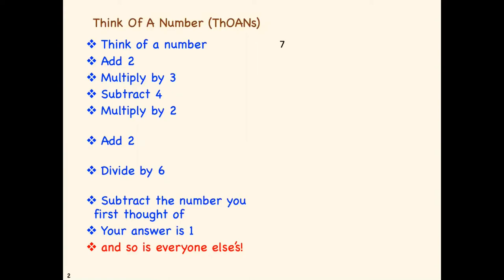Think of a number, I choose seven. Add two, multiply by three, and all I get is three times seven plus six. The idea is to keep the seven isolated and only do arithmetic around it. Subtract the four, multiply by two, you get two times three times seven, six times seven, plus two times two, it's four, add another two.